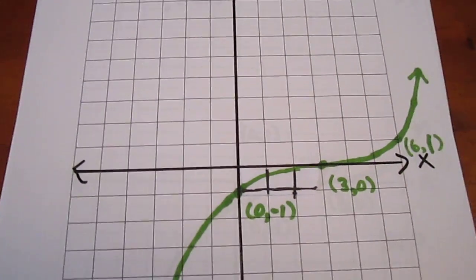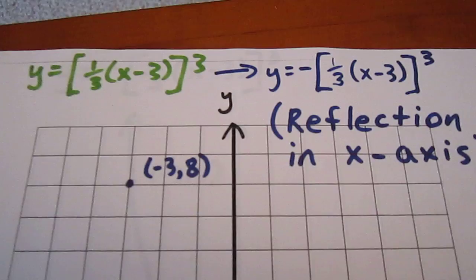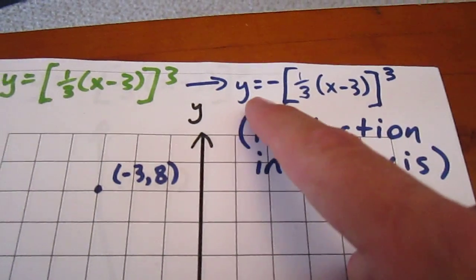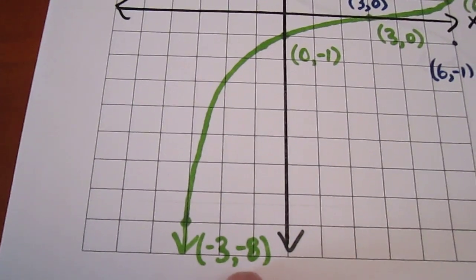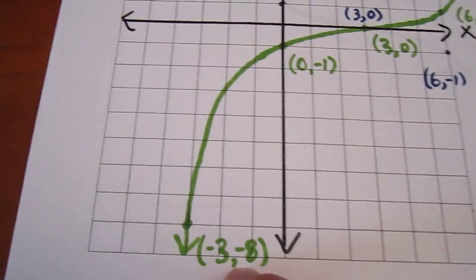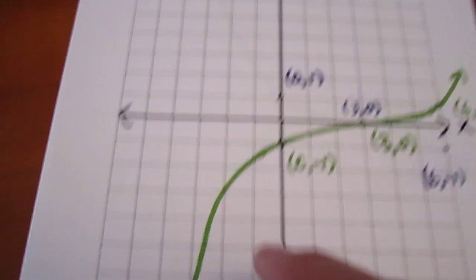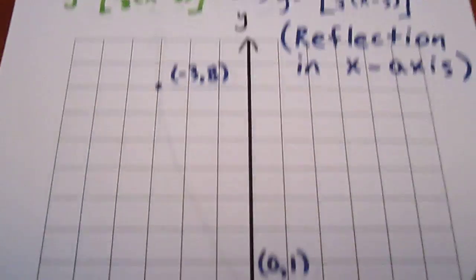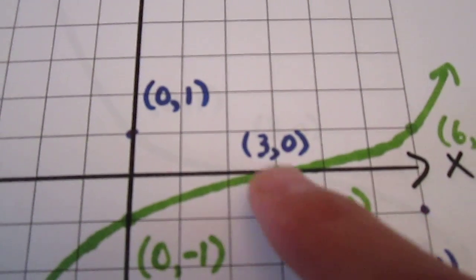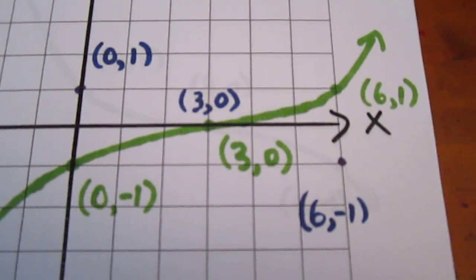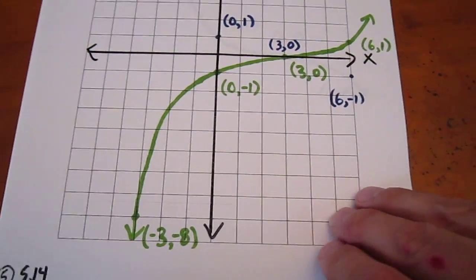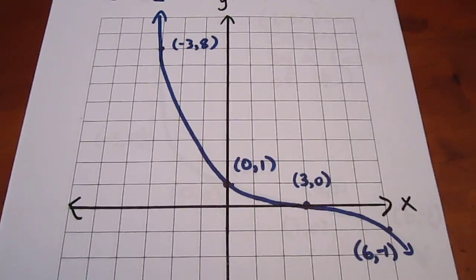We're now two transformations in. The third transformation is a reflection in the x-axis, which occurs when we have a negative a value. We multiply each y-coordinate by negative one: negative three negative eight becomes negative three positive eight; zero negative one becomes zero one; three zero stays three zero; and six one becomes six negative one. We ignore the green curve and draw a new curve through the blue coordinates.